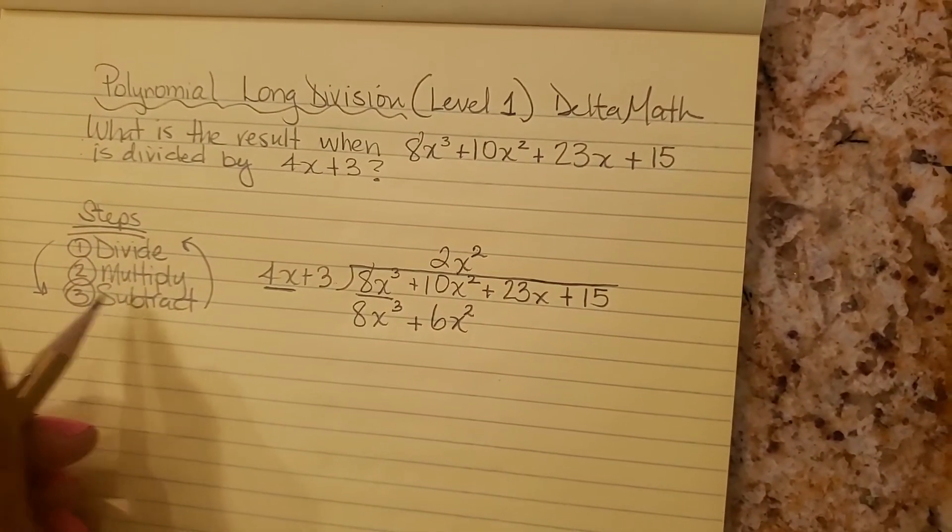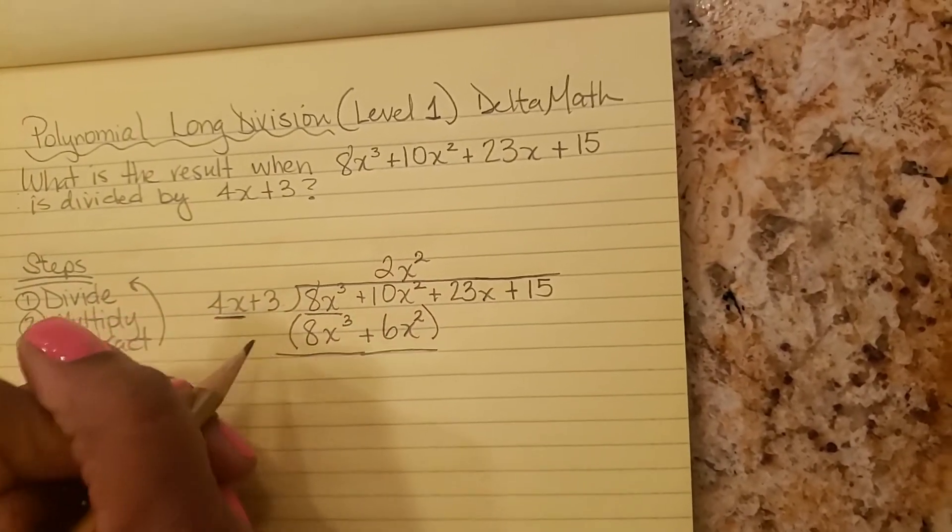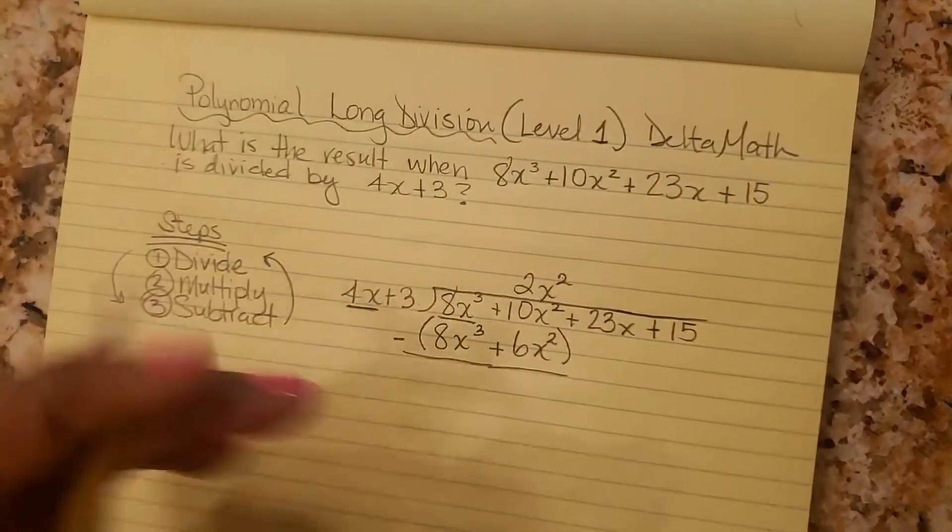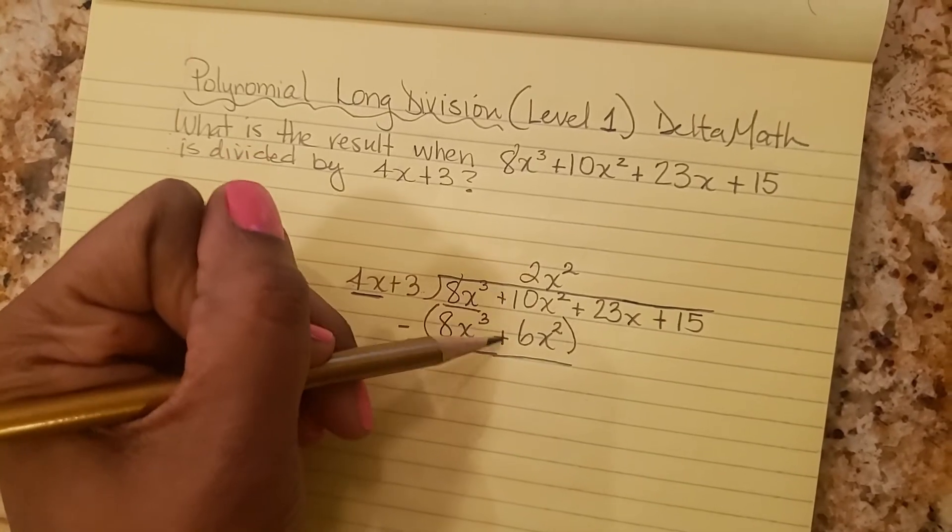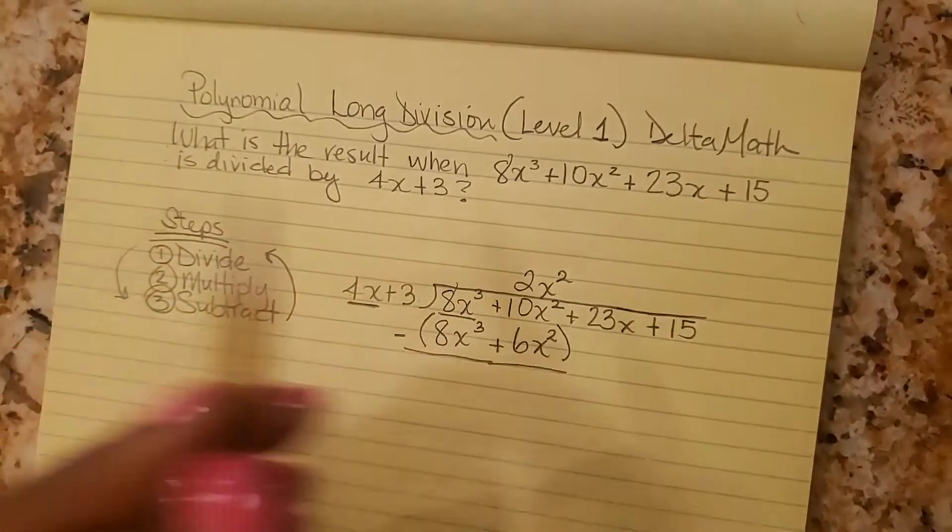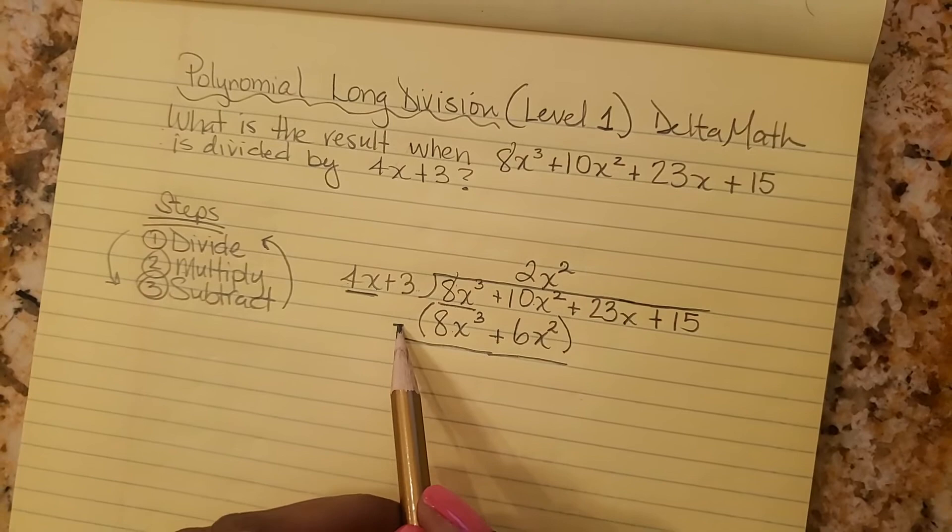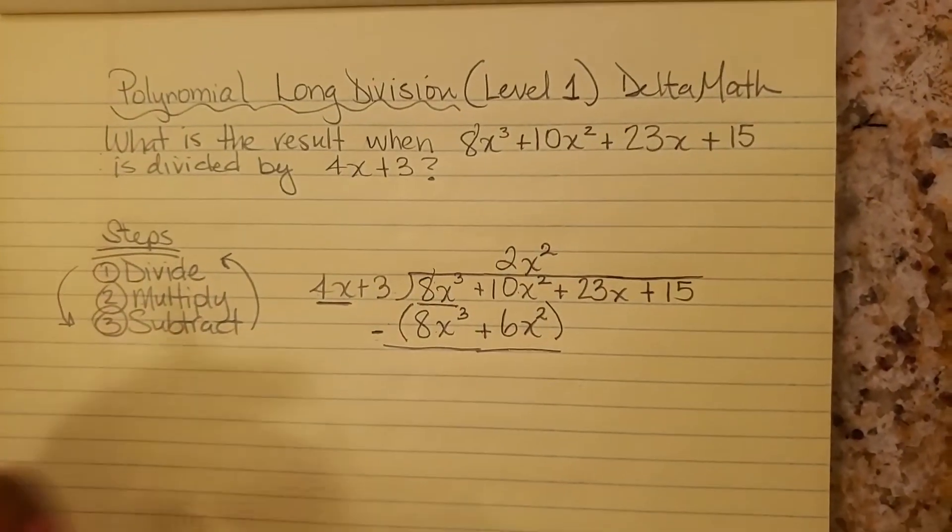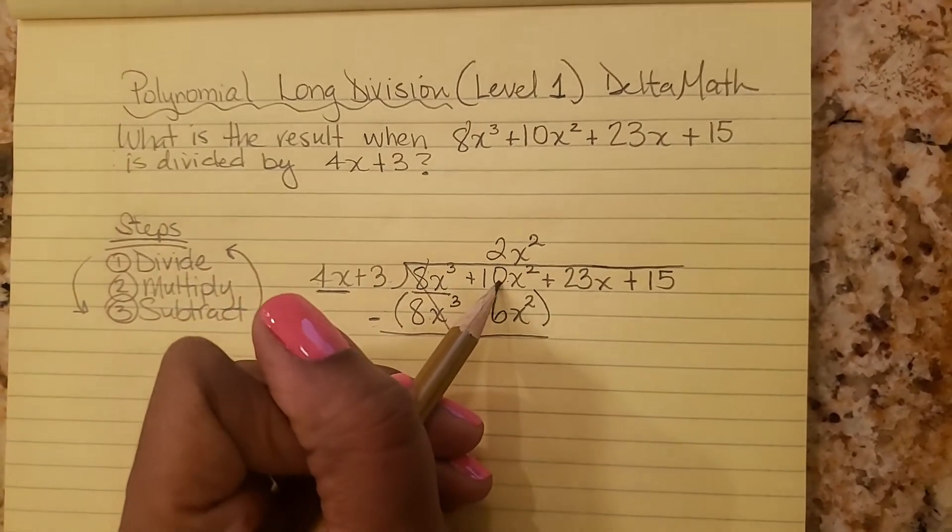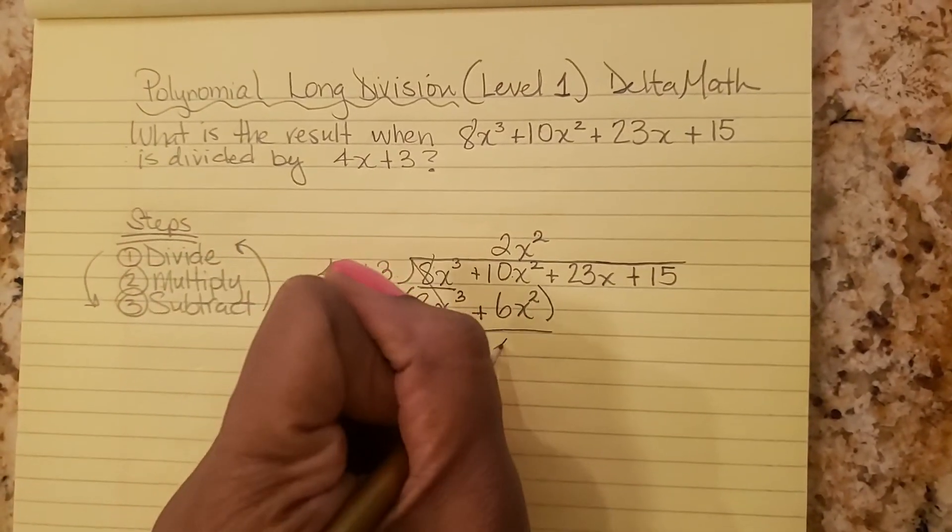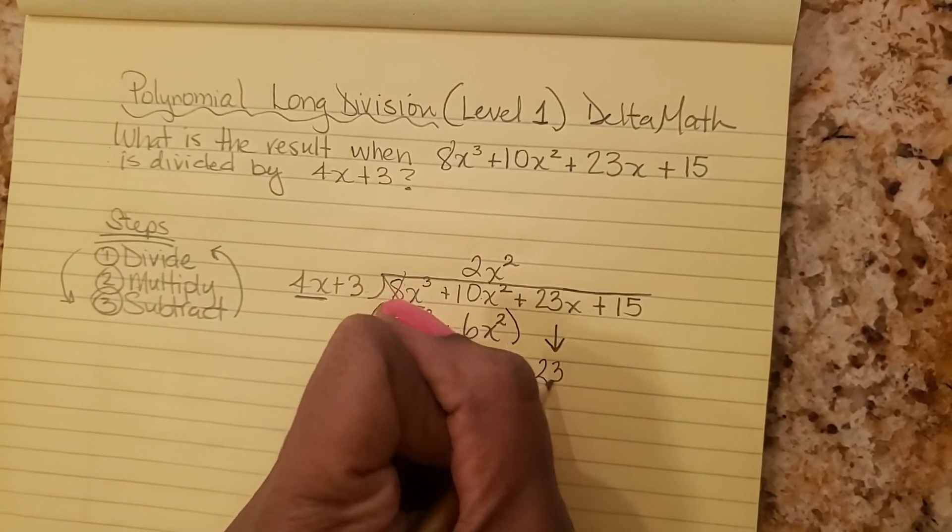The next step is to subtract. So put parentheses around this so that you don't forget that you're subtracting this entire polynomial from this entire polynomial. Sometimes you tend to forget and you end up adding these two and getting 16x squared. Wrong! We are subtracting. Always swing back out here to the minus sign. So 8x cubed minus 8x cubed is 0. 10x squared minus 6x squared is 4x squared. And then we bring down the next term, plus 23x.